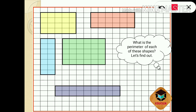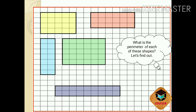Let us calculate the squares of one side: one, two, three, four, five. So this side is 5 centimeter. It is a rectangle, so the opposite side is also 5 centimeter. Now the other side: one, two, three, four — so this side is 4 centimeter. Five plus four equals nine, nine plus five equals 14, 14 plus four equals 18. So the perimeter of this shape is 18 centimeter.